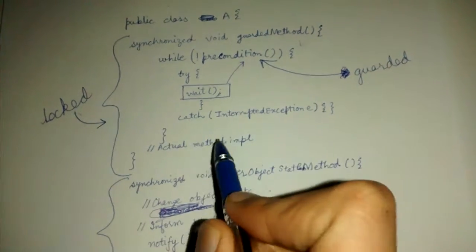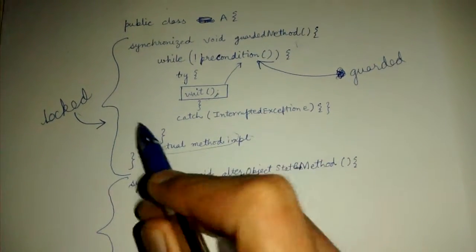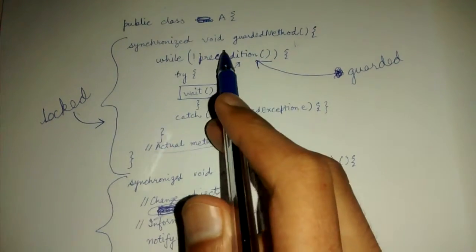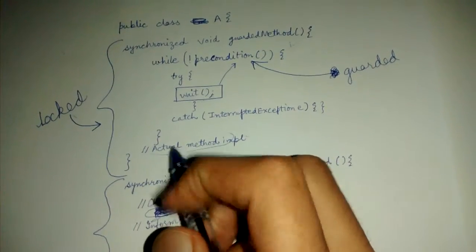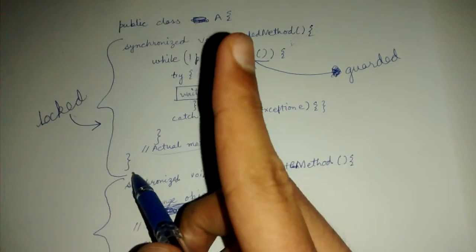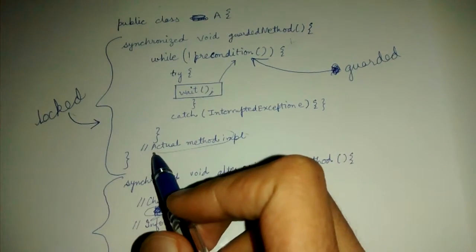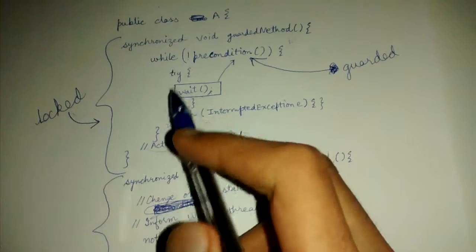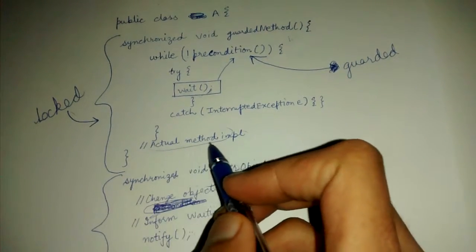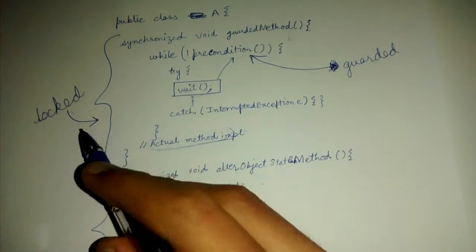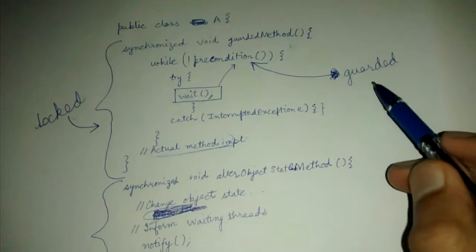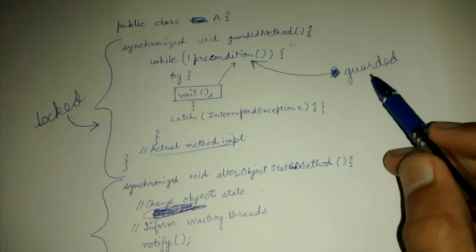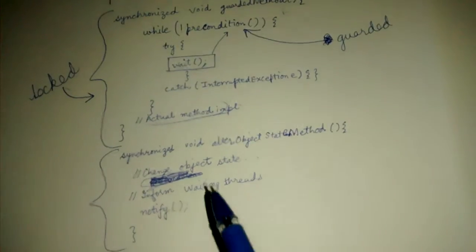Because at most one synchronized method can be called on that object at a time. Hence the actual method implementation is locked because unless you acquire the lock you cannot reach it, and at most one thread can have the lock for an object at a time. So first thing is actual method implementation is protected by a lock.